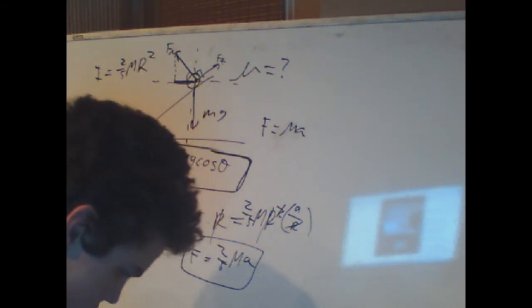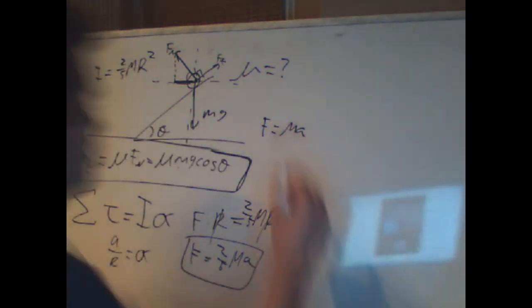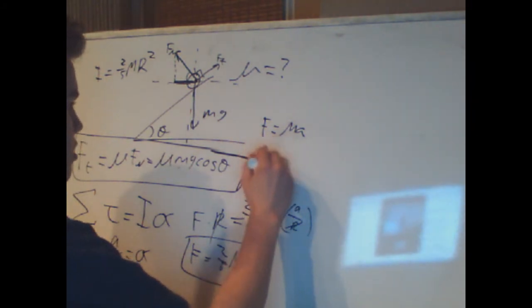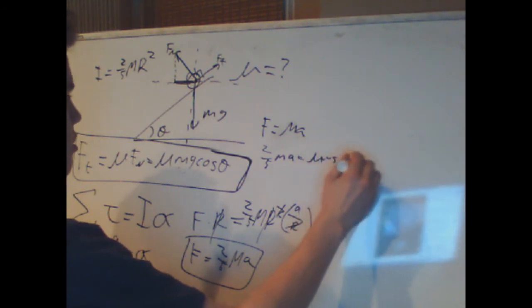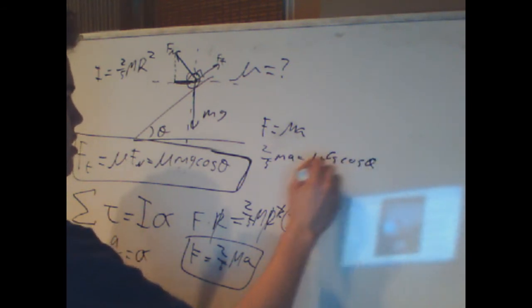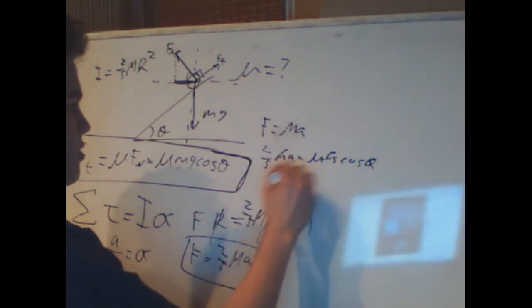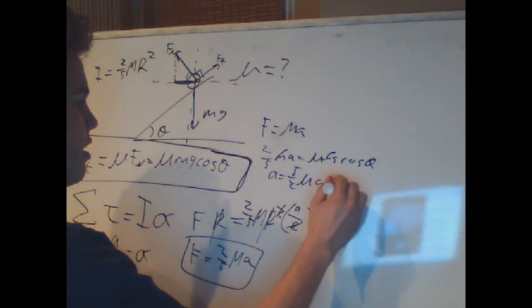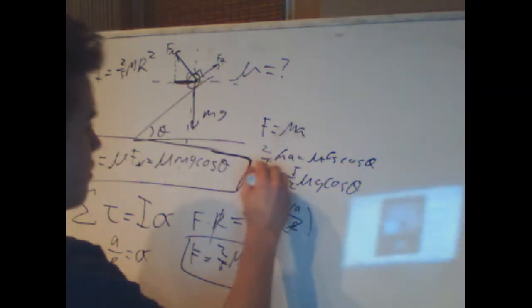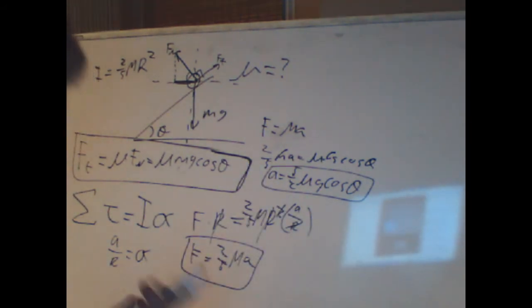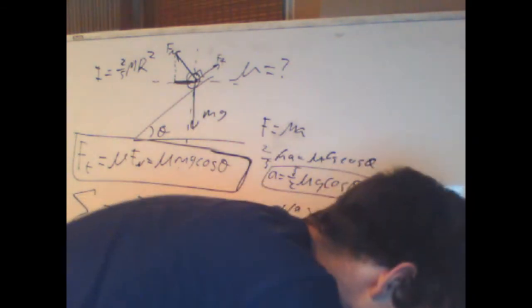That's going to be on the right side of our equation, or one of the components of our equation. Because f equals m a for that reason. So this is the same as the frictional force. So we set these equal to each other.